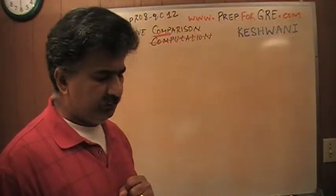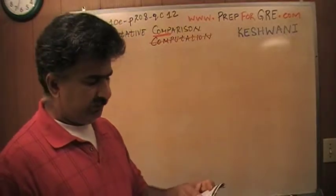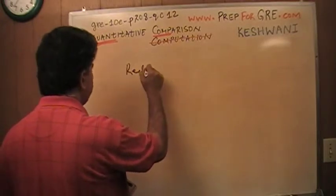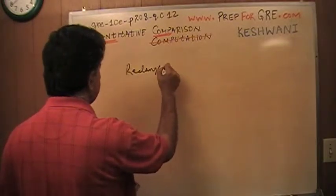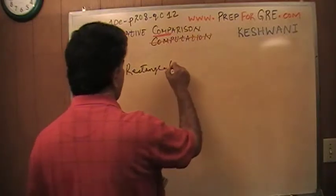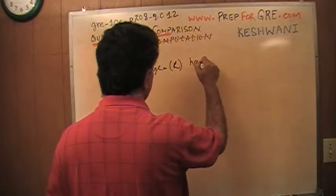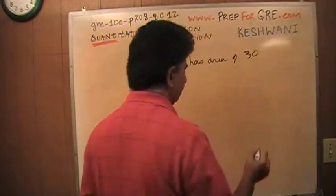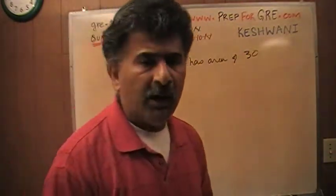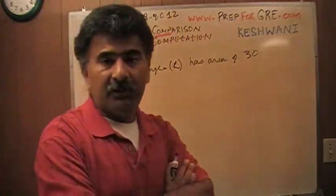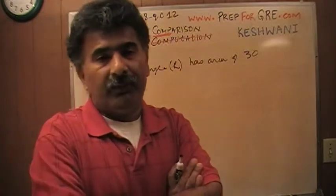It says rectangular region R has area 30. So we know that we have a rectangle and they're calling it R. Has area of 30.